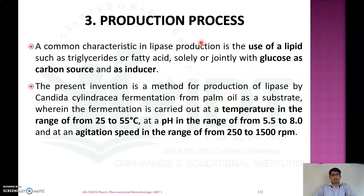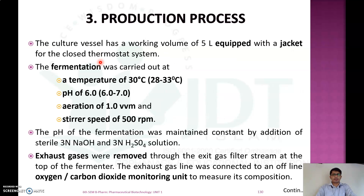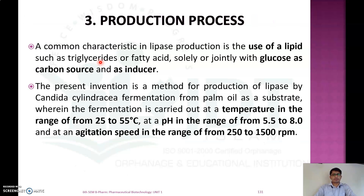A common characteristic in lipase production is the use of lipid, such as triglycerides and fatty acids, which is usually combined with glucose used as a carbon source as well as an inducer for lipase production. This is the standard procedure, but other conditions may also be used, such as temperatures of 25–50°C, pH range of 5.5–8, and agitation speeds of 250–1500 RPM, depending on the type of microorganism and culture media used.